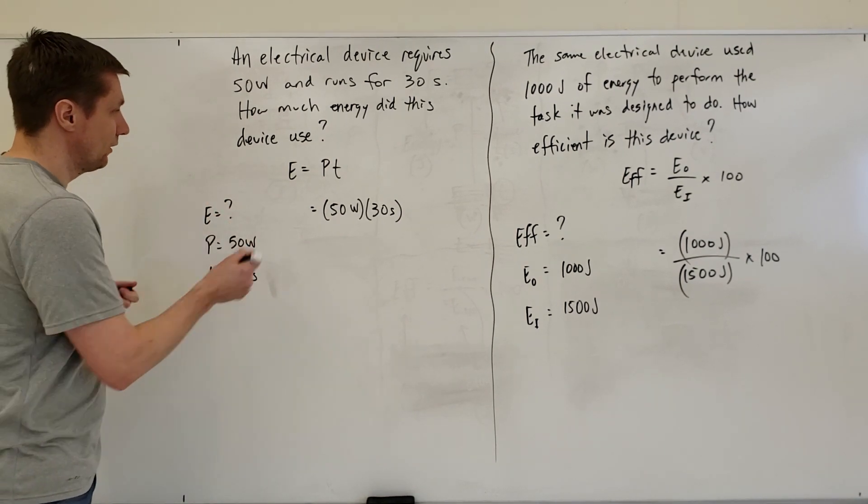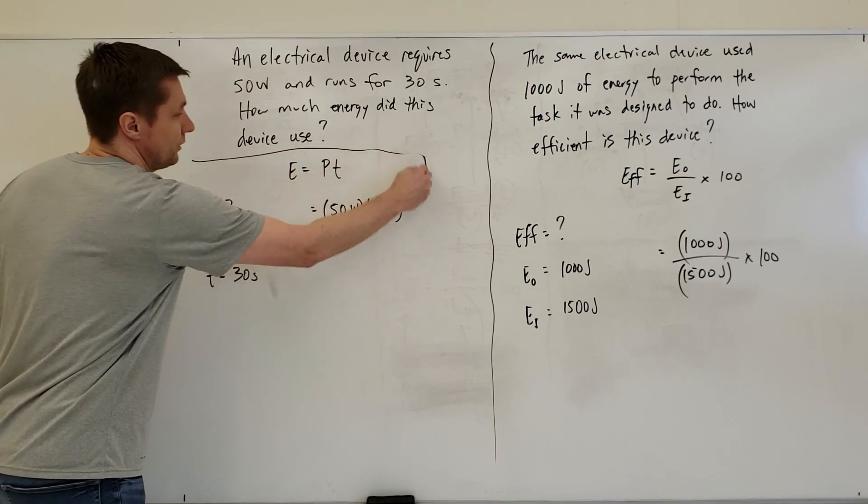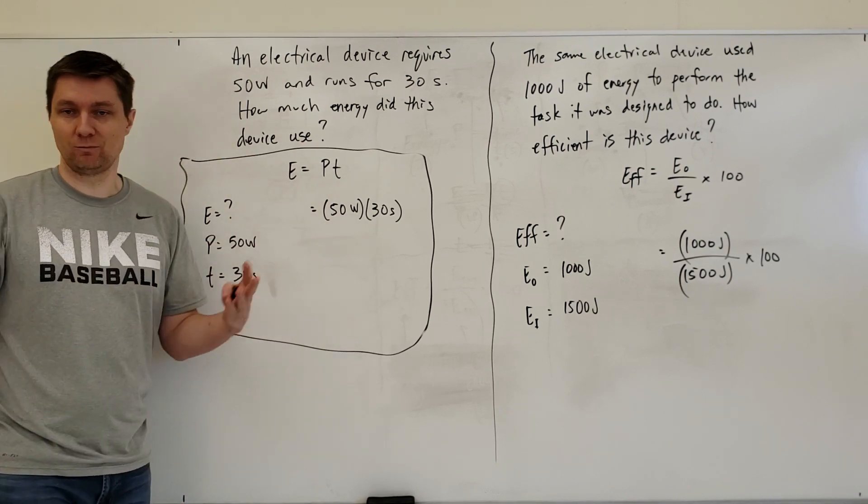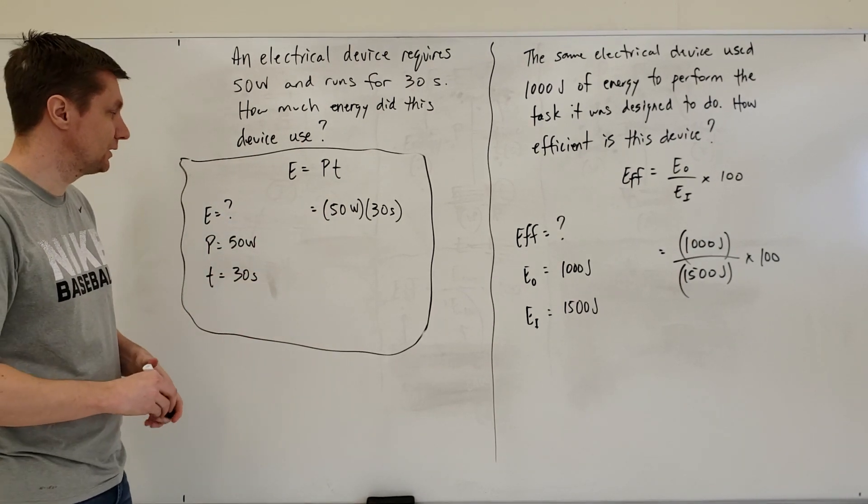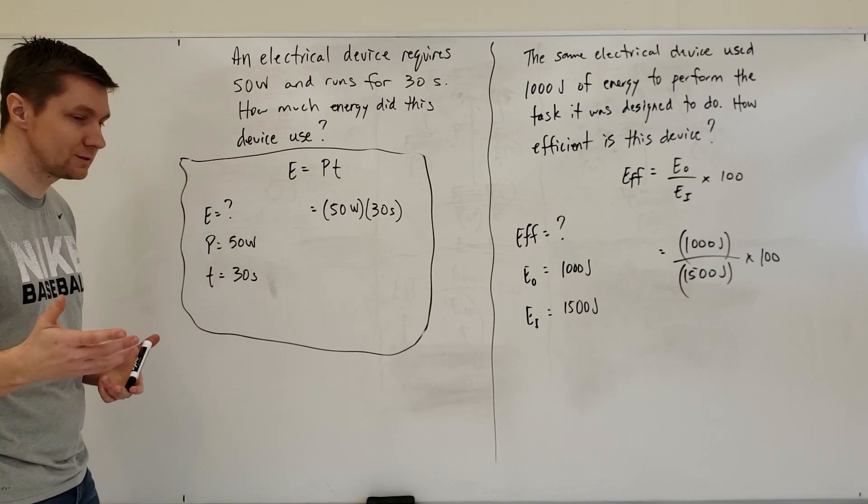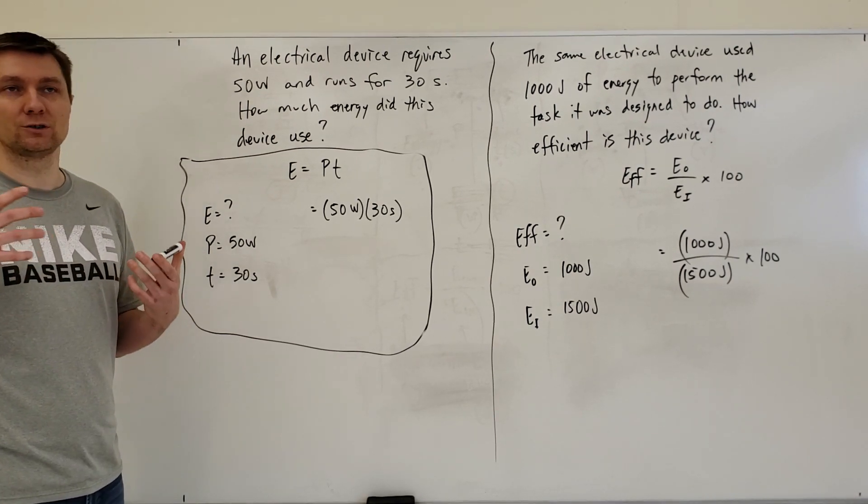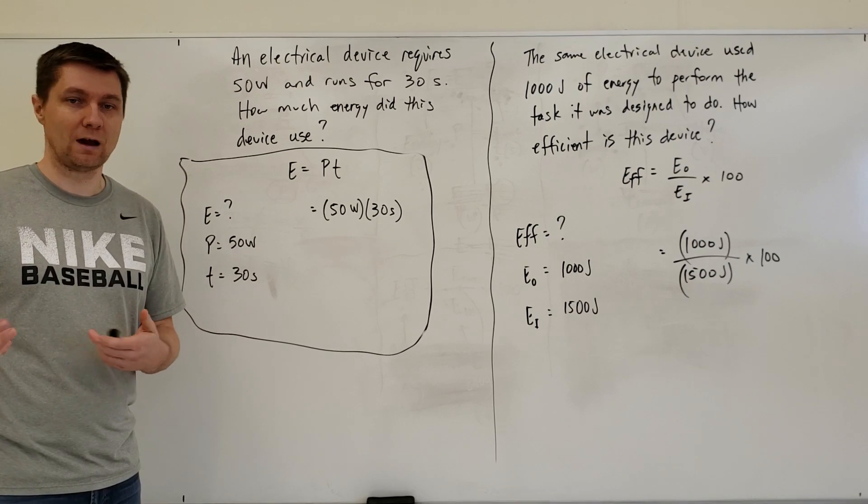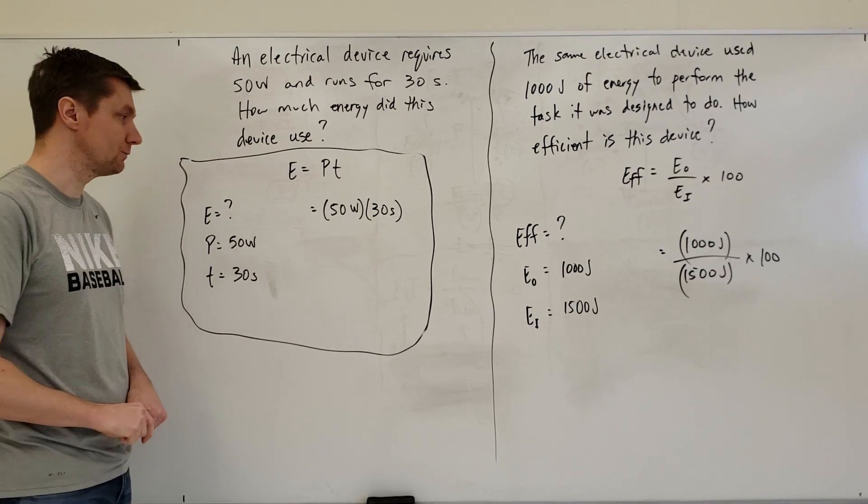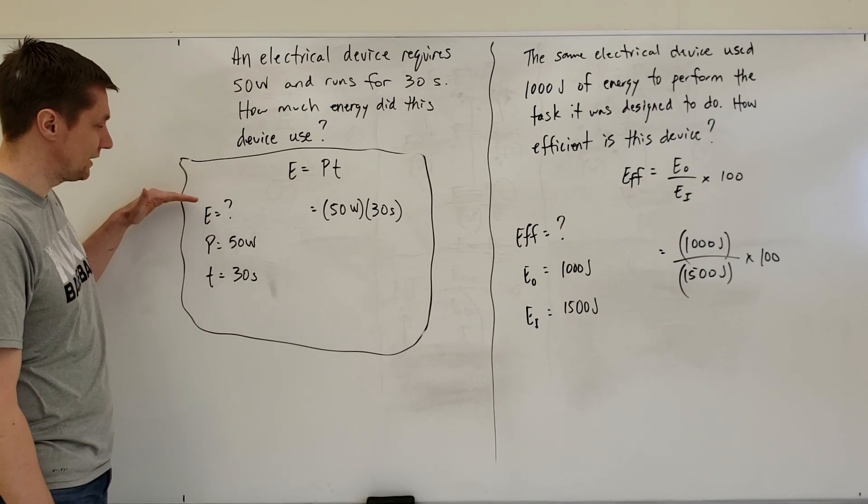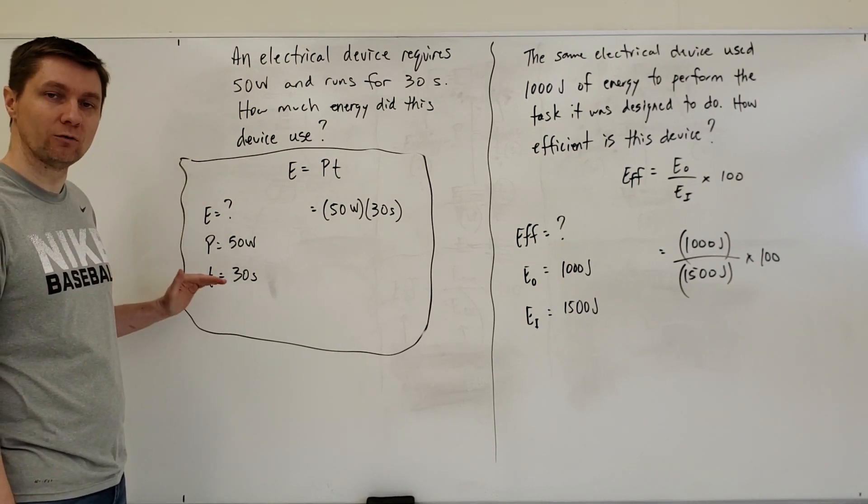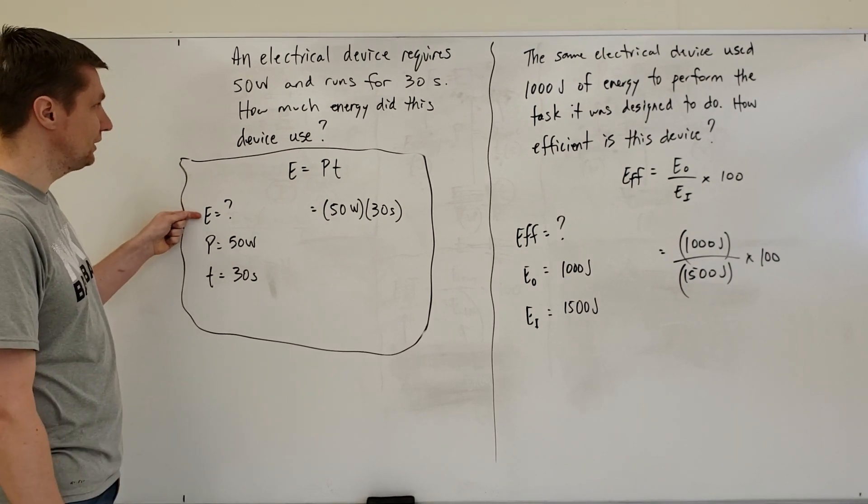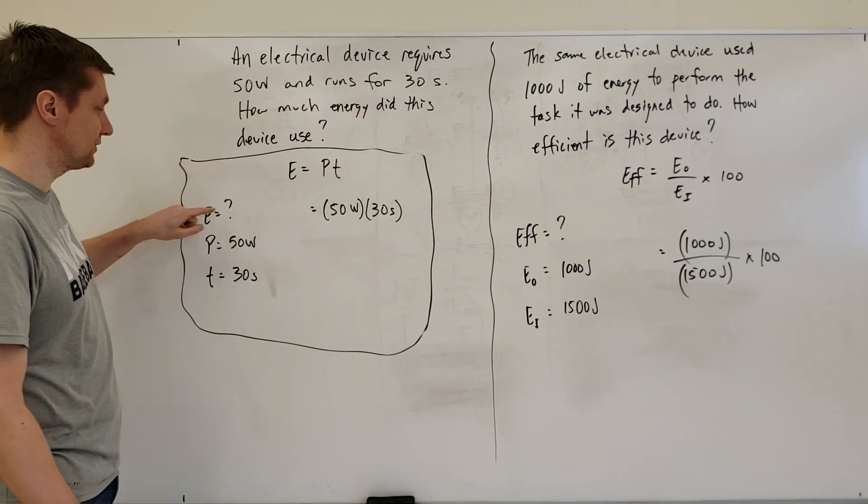What you see here on the board is what you need to write down to show your work. Anything less than this would be considered incomplete. This is a great way to help keep things organized and make sure your work is legible, that you're plugging things in correctly, and that Mr. Wolf and I know you know what you're doing. List out first the information you have: What is E equal, what does P equal, and what does T equal? For this question, E is what we're calculating - E equals question mark. P equals 50 watts and T equals 30 seconds.